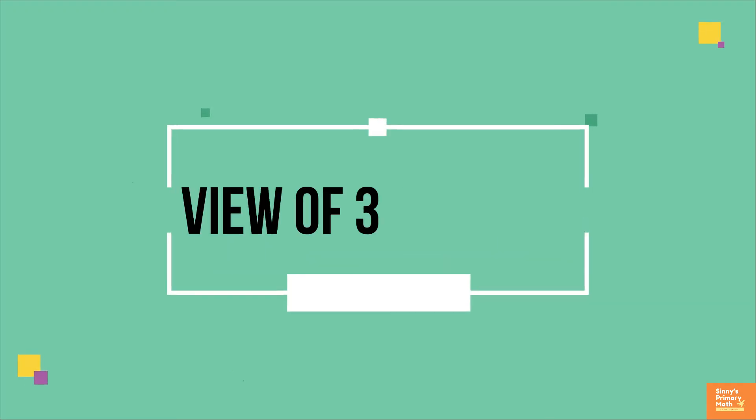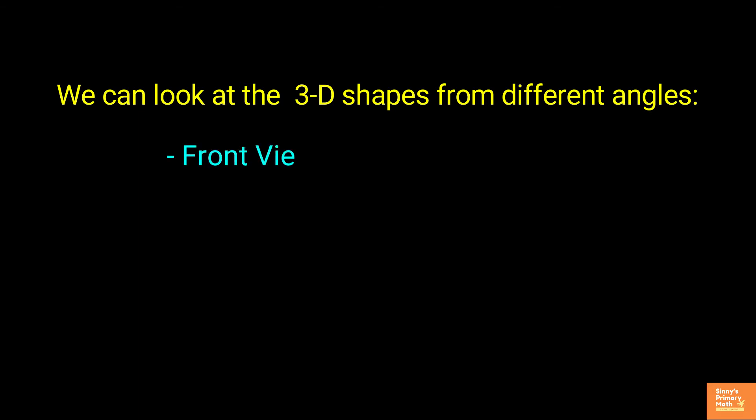View of 3D shapes. We can look at 3D shapes from different angles: the front view, the side view, and the top view. It can provide a lot of information about the shape observed. Any 3D shape has a top view, side view, and front view.